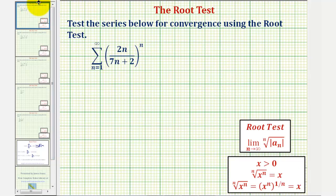We should notice in our case, we have 2n divided by the quantity (7n + 2) raised to the nth power, and therefore the root test is the appropriate test.